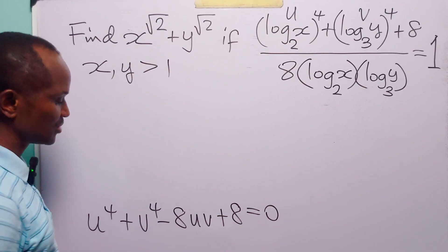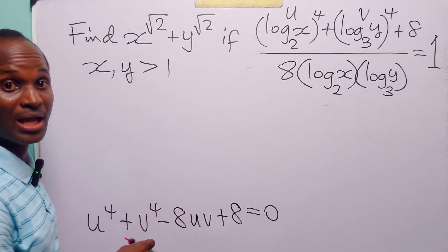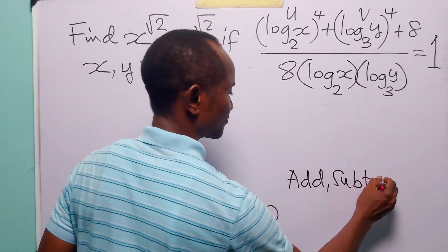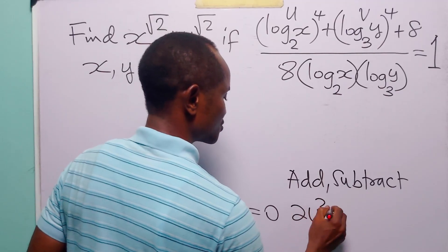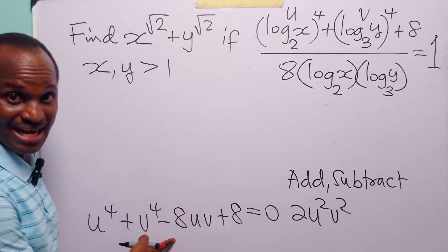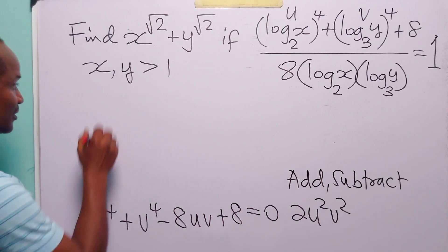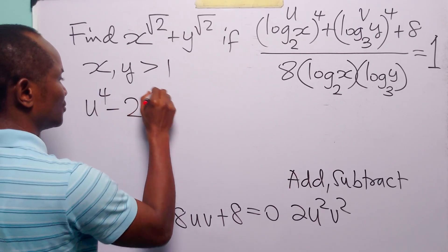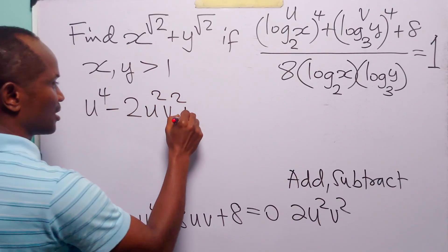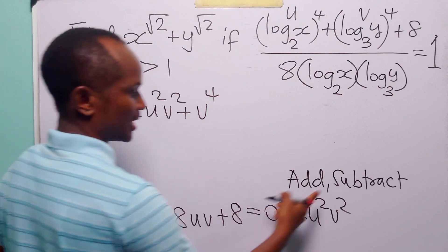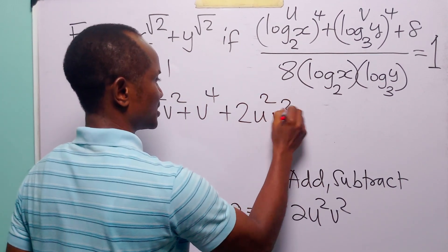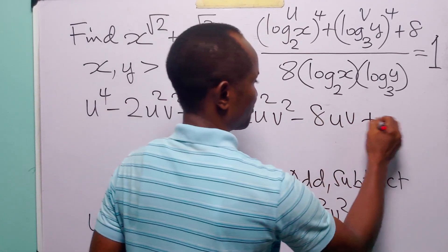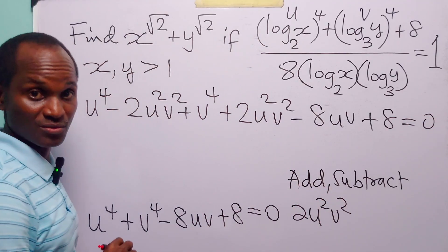The next thing we are going to do is complete the square on the left-hand side of the equation. To do that, we need to add and subtract 2u squared v squared to the left-hand side. When we do that, we have u to the power of 4 minus 2u squared v squared plus v to the power of 4, plus 2u squared v squared minus 8uv plus 8, and this is still equal to 0.